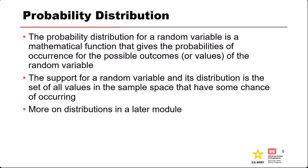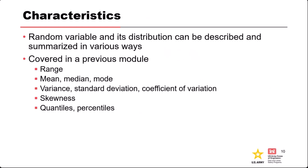A good term to know is the support for a probability distribution — the set of all values in the sample space that have some chance of occurring. For example, the lognormal distribution: in log space you can't have values less than or equal to zero, so the support for a lognormal random variable would be any value greater than zero. In contrast, a normal distribution is unbounded, so its support is minus infinity to infinity. Knowing the support can help you choose distributions that make sense for your data.